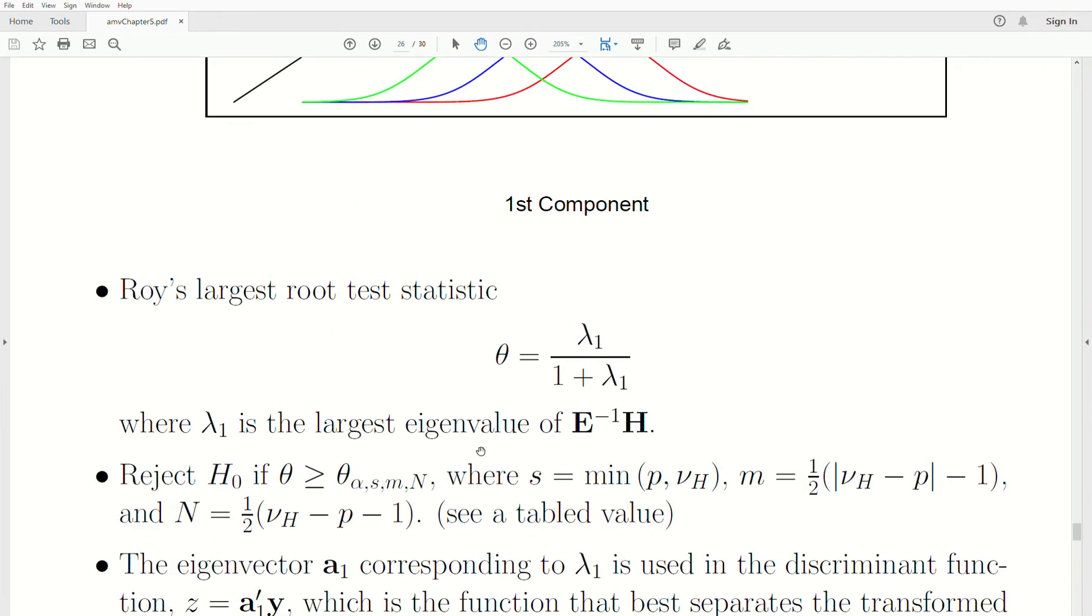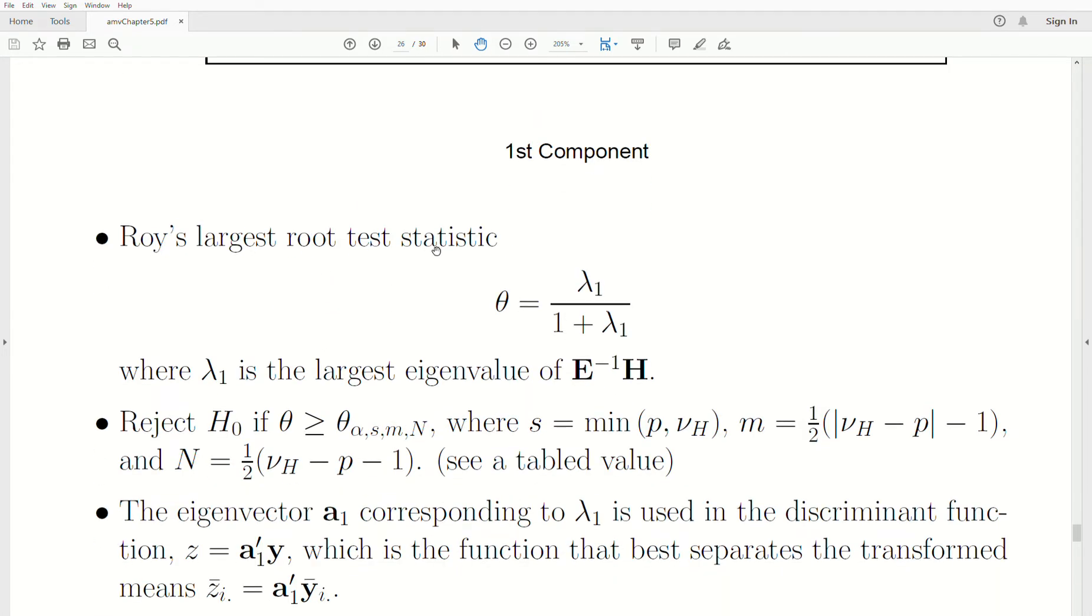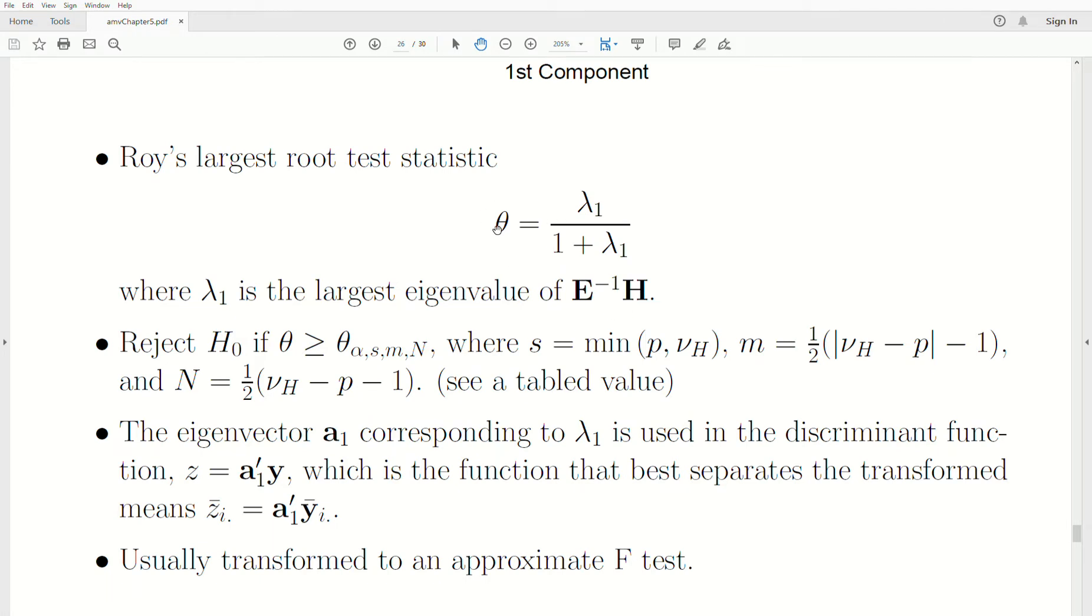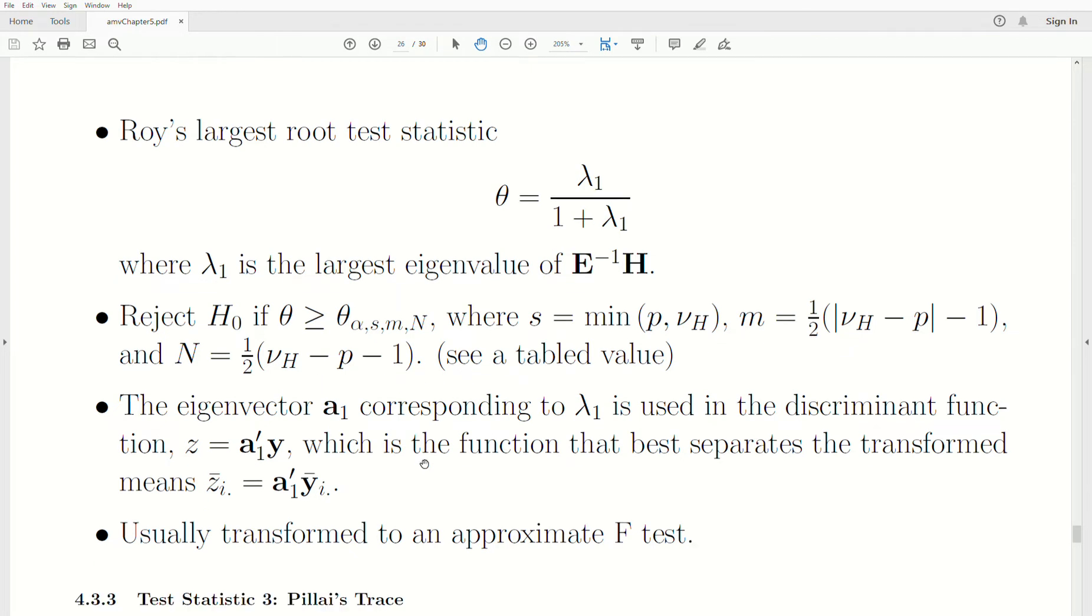And anyway, so that's what Roy's test does. Even though it's kind of hard to tell from this test statistic, Roy's largest root test is this. So it's Lambda 1 over 1 plus Lambda 1. And so where Lambda 1 is the largest eigenvalue of this matrix product, E is the error matrix, the inverse of the error matrix, and the hypothesis matrix. Now, if theta is too large, then we reject. And the rejection region is a function of the dimensions P and the degrees of freedom associated with H.